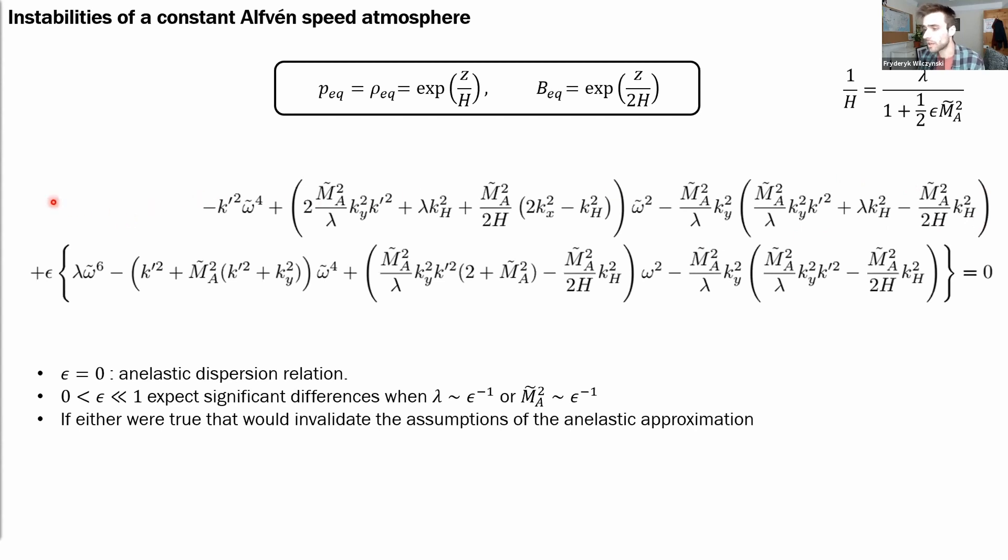So now by looking at this expression, we can assess what are the conditions so that there are significant differences between the results of the anelastic and compressible system. And with epsilon small,